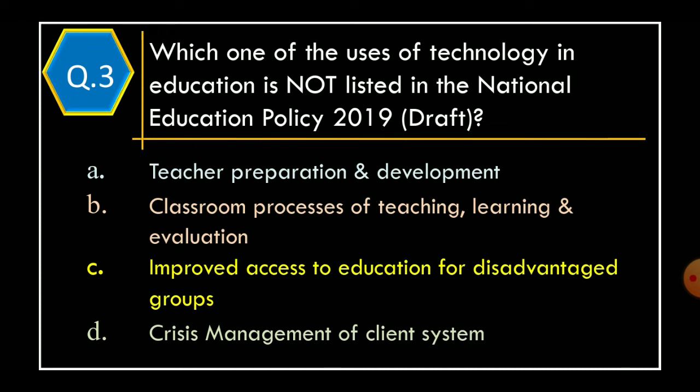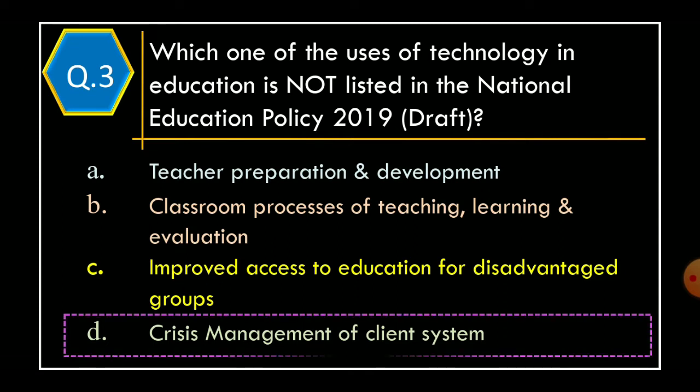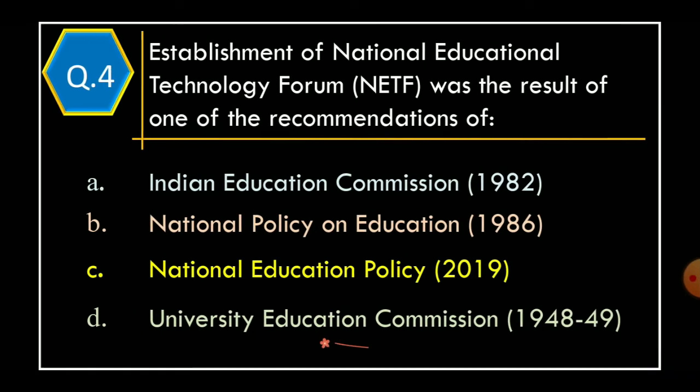Question 3. Which one of the uses of technology in education is NOT listed in the National Education Policy 2019 draft? Option A: Teacher Preparation and Development. Option B: Classroom Processes of Teaching, Learning and Evaluation. Option C: Improved Access to Education for Disadvantaged Groups. Option D: Crisis Management of Client System. The correct option is Option D: Crisis Management of Client System.